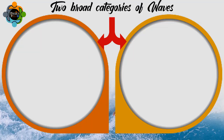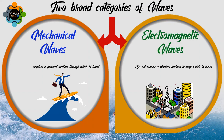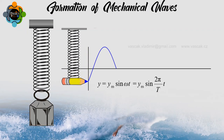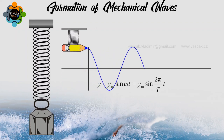This allows us to put all waves into two broad categories. Number one: mechanical waves, which require a physical medium through which to travel. Number two: electromagnetic waves, which do not require a physical medium through which to travel.